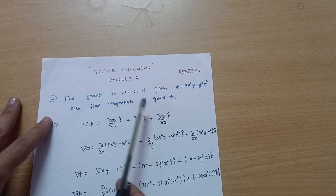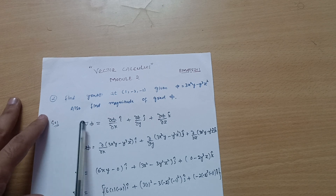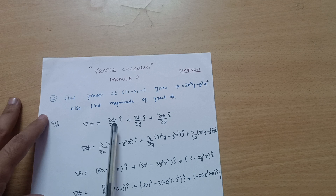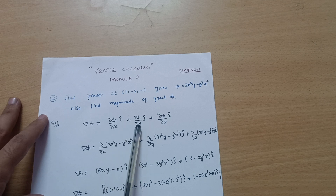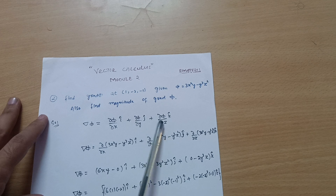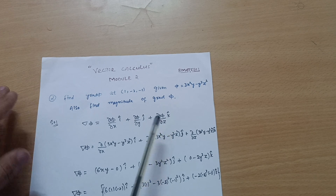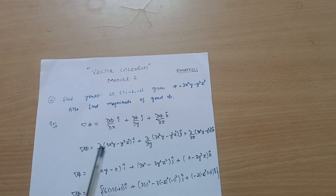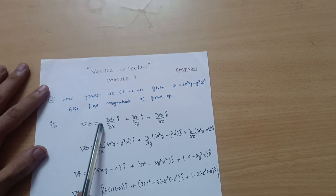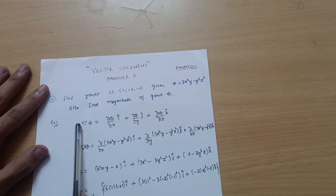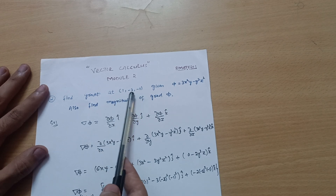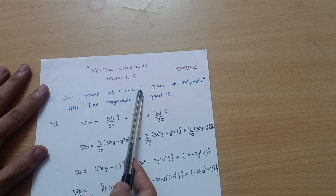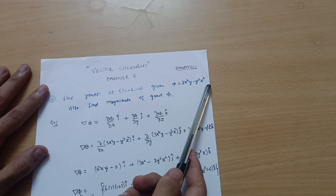First, as we already know, the formula is: del phi equals (∂φ/∂x) î + (∂φ/∂y) ĵ + (∂φ/∂z) k̂. In the previous video I explained that del phi is a vector quantity. We are supposed to calculate this — also called grad phi — at the point (1, -2, -1).